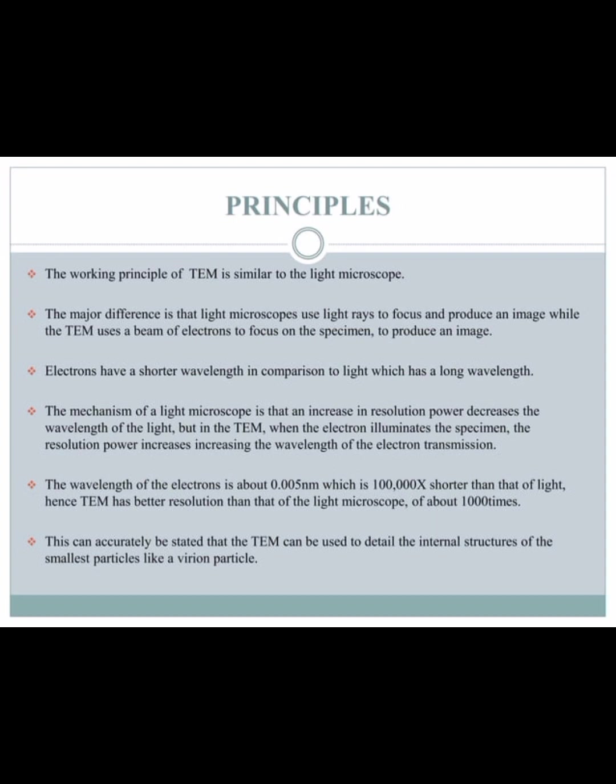The mechanism of a light microscope is that an increase in resolution power decreases the wavelength of light. But in TEM, when the electron illuminates the specimen, the resolution power increases, increasing the wavelength of the electron. The wavelength of the electron is about 0.005 nanometers.